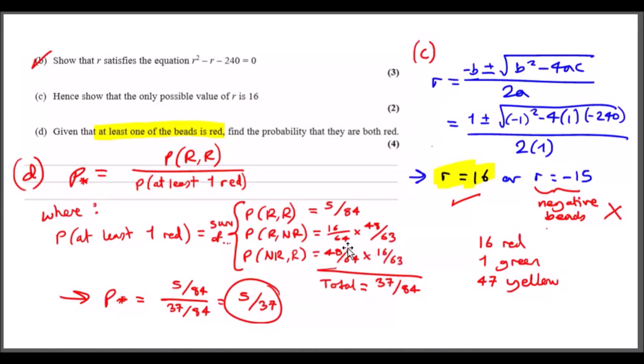And so on, same thing, pretty much identical to the second part. All you want to do is solve these and then add them up to get a total probability of 37/84, which is the at least one red.